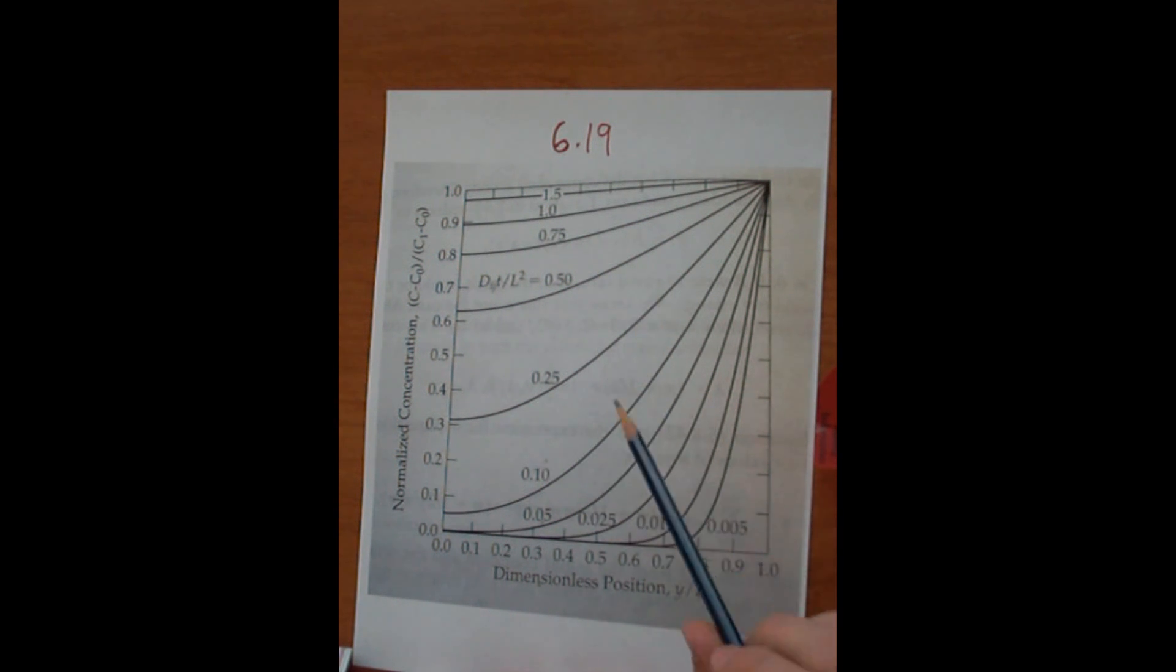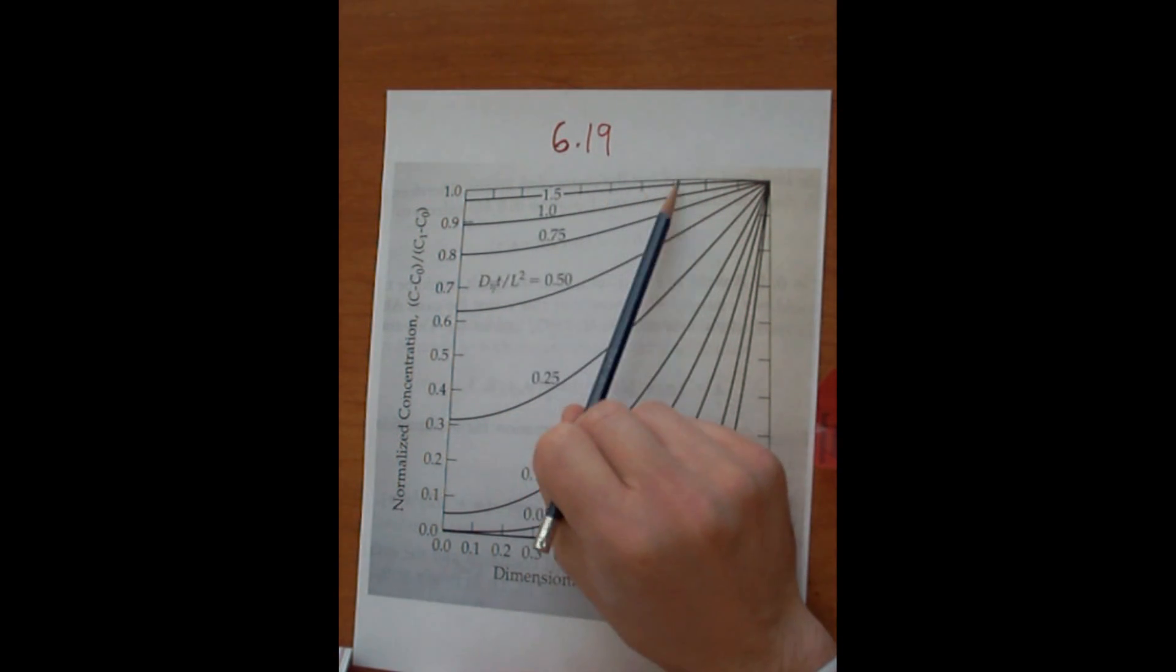Because over time the solute diffusing into the slab is going to get to a concentration where the concentration is going to be the same all the way throughout the slab over a certain period of time. And so as you can see, it gets more horizontal as the time increases. So this horizontal line here at the top, we can estimate it maybe to be close to 2 as non-dimensionalized time.